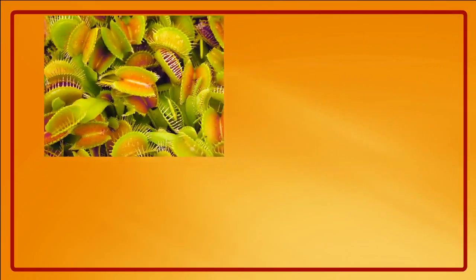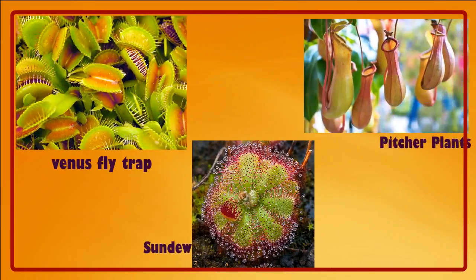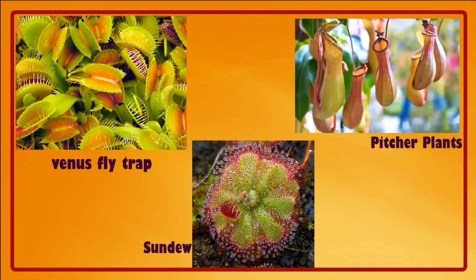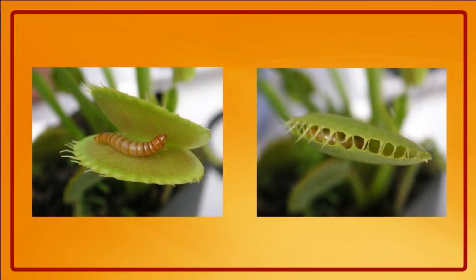Venus flytrap, sundew and pitcher plant are examples of insectivorous plants. They grow in soil which is poor in nutrients and hence they trap insects to get enough nitrogen.